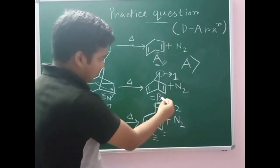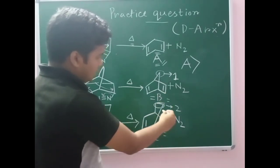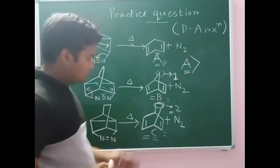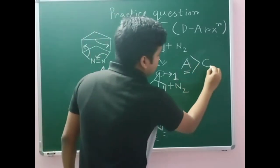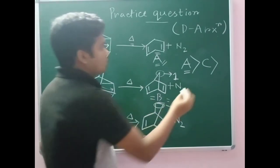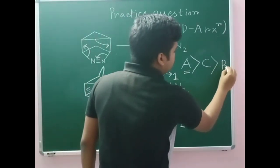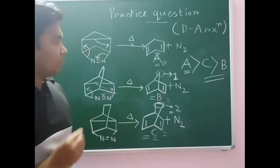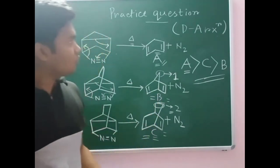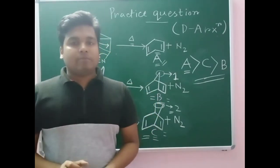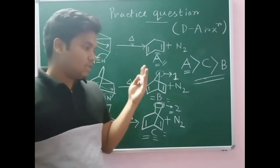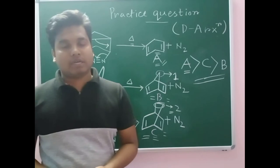Between B and C, the formation of C will be faster. So after A, the rate of formation of C will be second, and we are left with B, so the rate of formation of B will be slowest. In this way the correct answer is A > C > B. In this practice question I have discussed two basic concepts: the retro or reverse homo Diels-Alder reaction and the steric strain of bicyclic compounds.